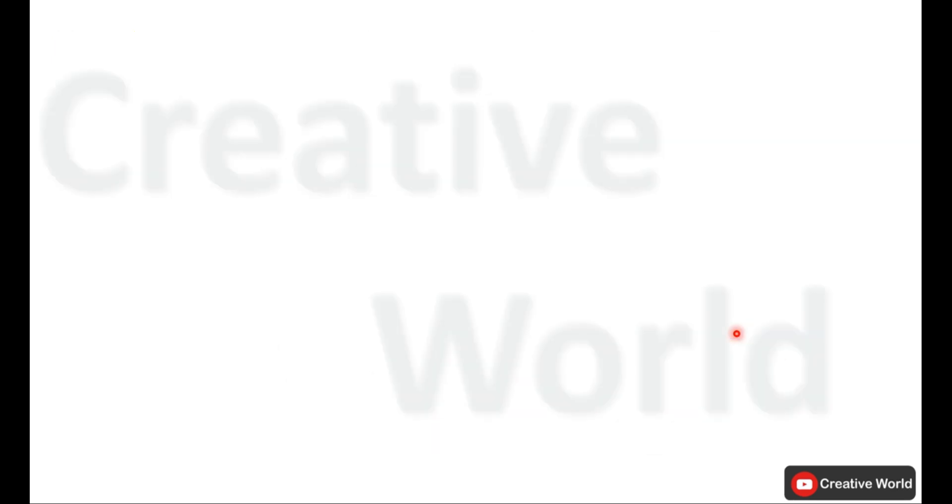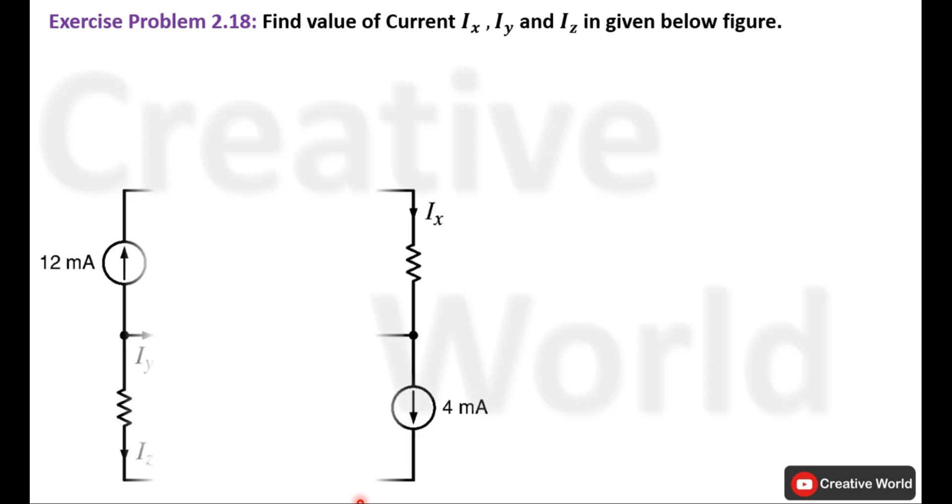Now move towards the problem. Exercise problem number 2.18. Find the value of current Ix, Iy, and Iz in the given figure below. This is the circuit diagram of the given problem.